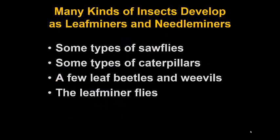The kinds of insects that develop as leaf miners and needle miners are quite diverse. There are some sawflies in the order Hymenoptera, some caterpillars in the order Lepidoptera, a few leaf beetles and weevils in the order Coleoptera, and some leaf mining flies in the order Diptera.